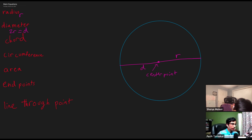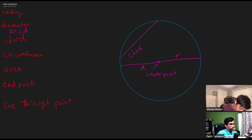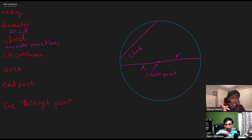We do have one condition with the diameter: it must start from one edge of the circle to the other, but it must pass through the center point. Now a line that Shorya has drawn that connects from one edge of the circle to the other is known as a chord. The diameter is actually a type of chord, but it's special in that it passes through the center point. The longest chord will be the diameter.